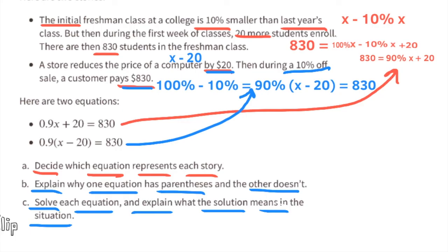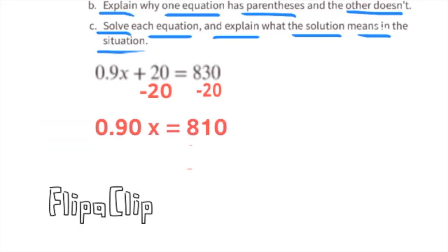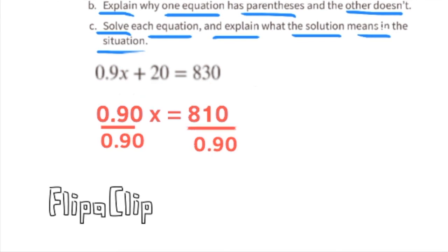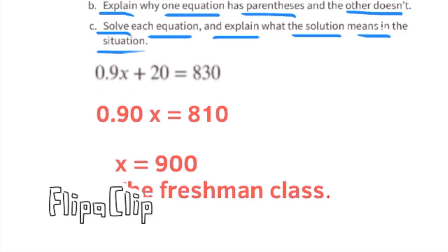Part c: Solve each equation and explain what the solution means in the situation. The first equation, 9 tenths x plus 20 equals 830. Subtract 20 from both sides of the equal sign. Now you're left with 9 tenths x equals 810. Divide both sides by 9 tenths, and you're left with x equals 900. 900 represents the number of students in the freshman class.